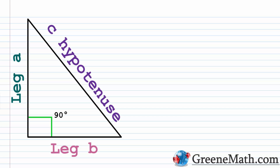The Pythagorean formula relates the lengths of the sides of a right triangle — a triangle with a 90-degree angle. On our screen we have a right triangle, and we know it's a right triangle because of the small square symbol indicating the 90-degree angle. You'll also notice that we've labeled each of the three sides.